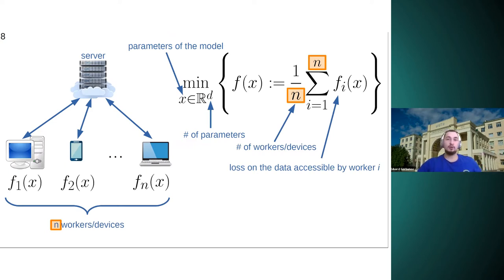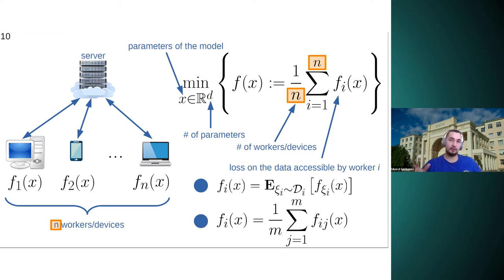And in the paper, we consider general cases when FI is an expectation of some stochastic function, or in particular, it can be a finite sum. But in this talk, I will focus more on compression and I will not touch the stochastic algorithm with stochasticity coming from the problem. So we will deal with the stochasticity only from compressions. And this is a classical federated learning setup, and in such systems communication is a bottleneck typically.